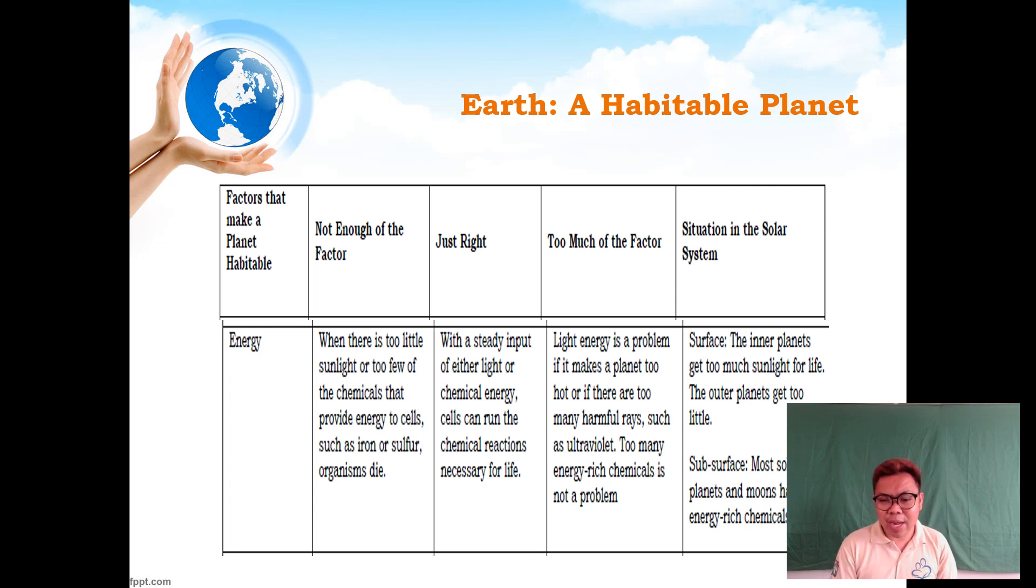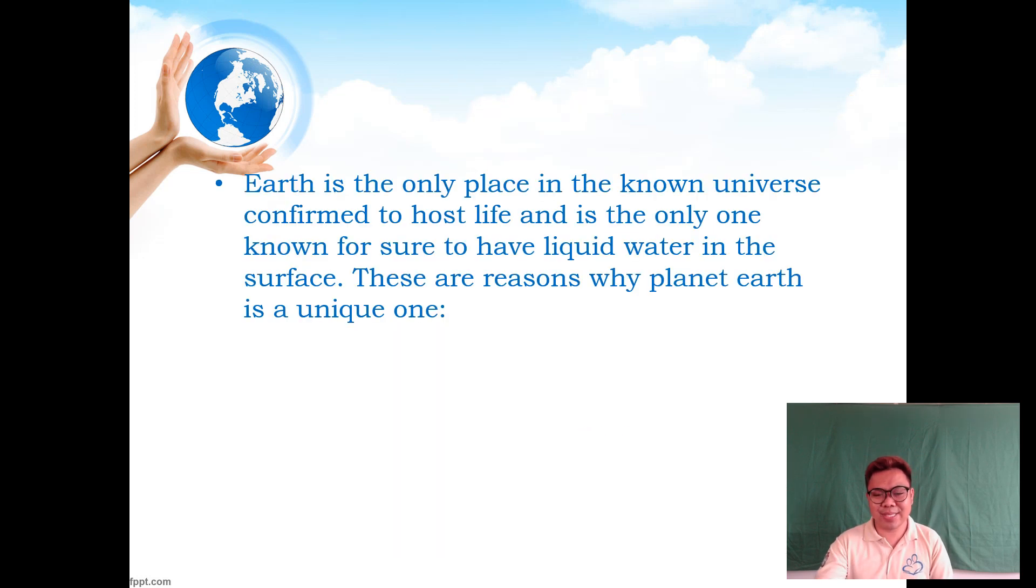The situation in the solar system: the inner planets—Mercury, Venus, Earth, and Mars—get enough sunlight for life. The outer planets get too little. Mars, Venus, Earth, and Mercury can absorb light, so there's a chance of life existence for different organisms. Earth is the only place in the known universe confirmed to host life and is the only one known for sure to have liquid water on the surface.